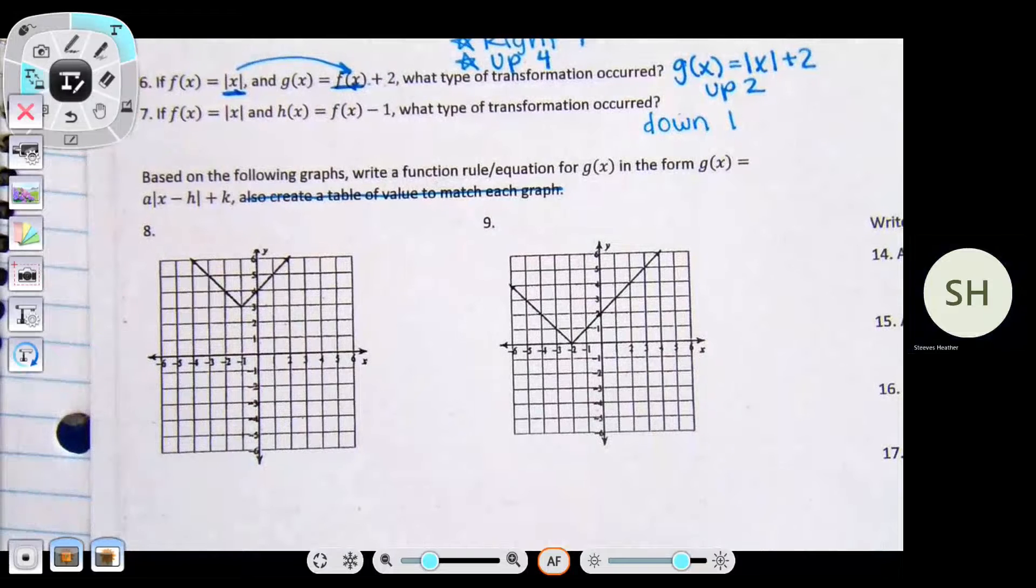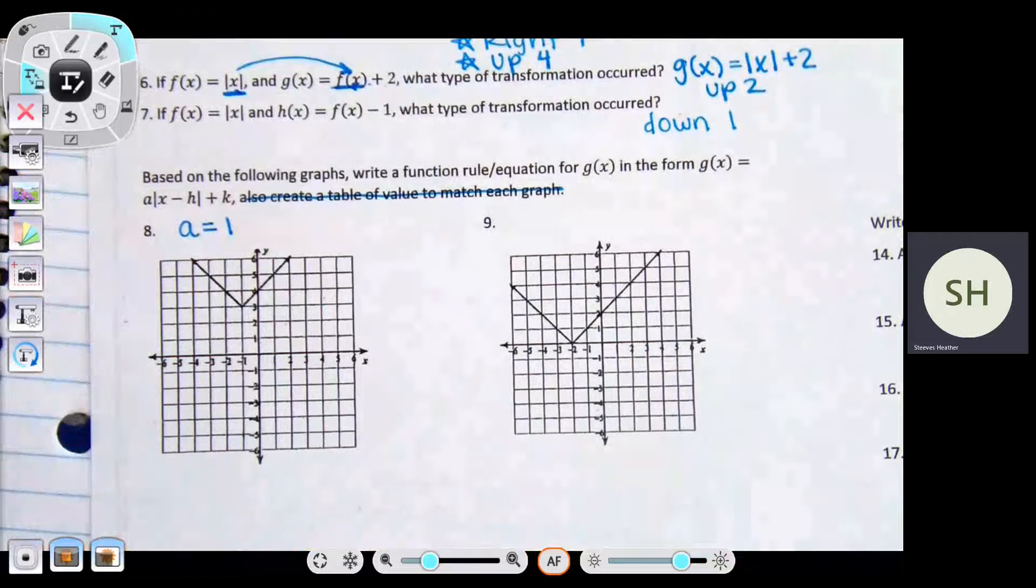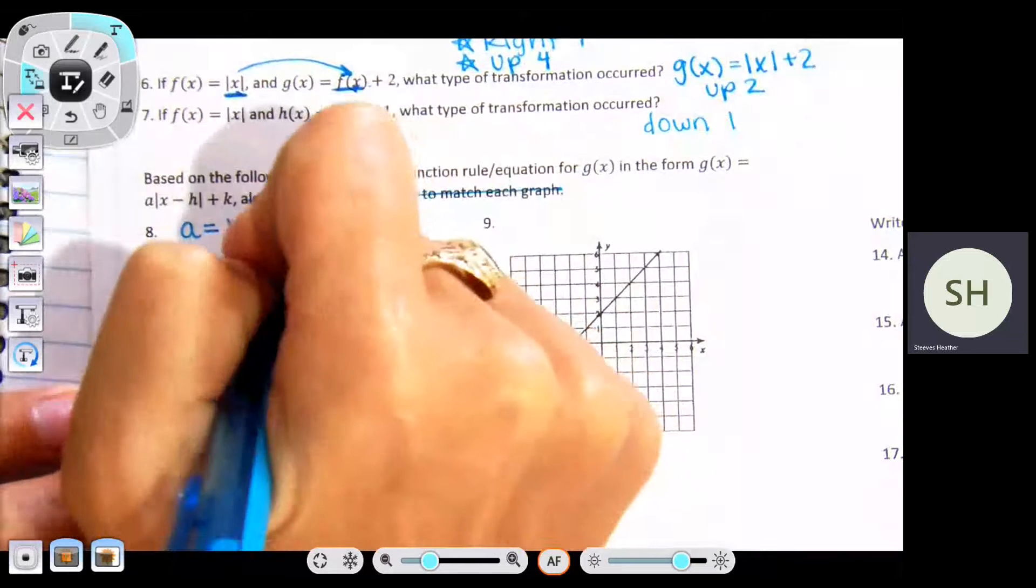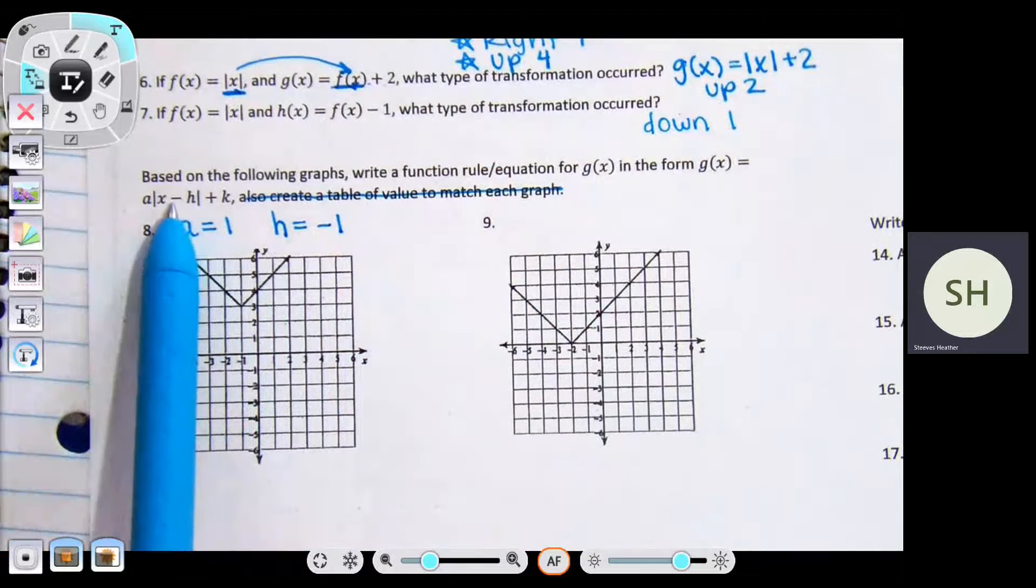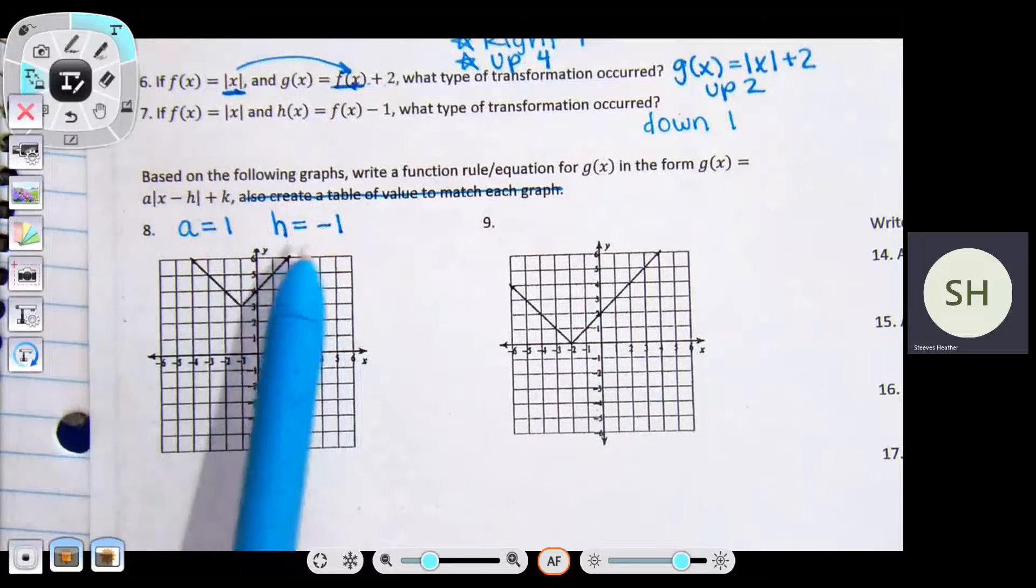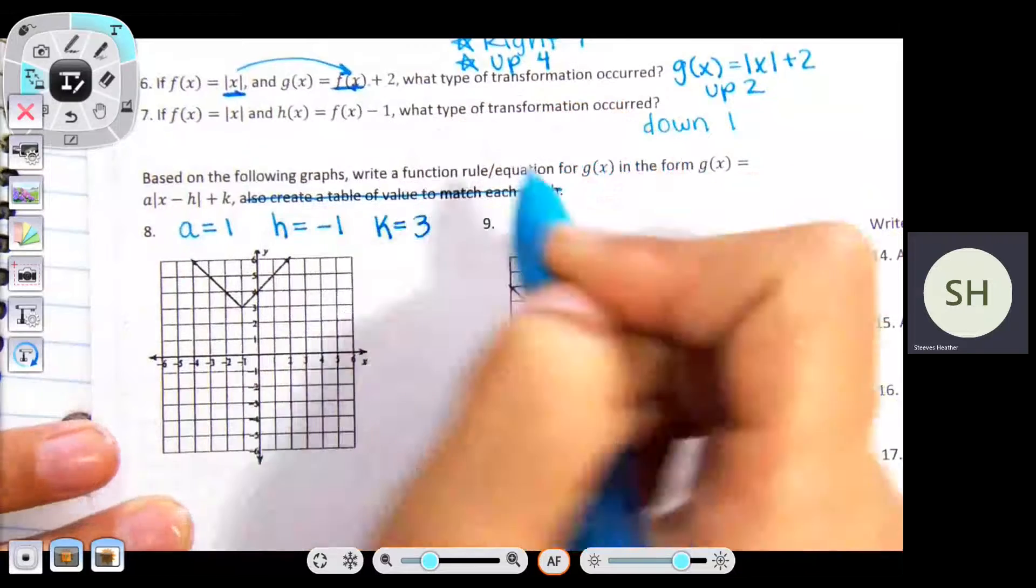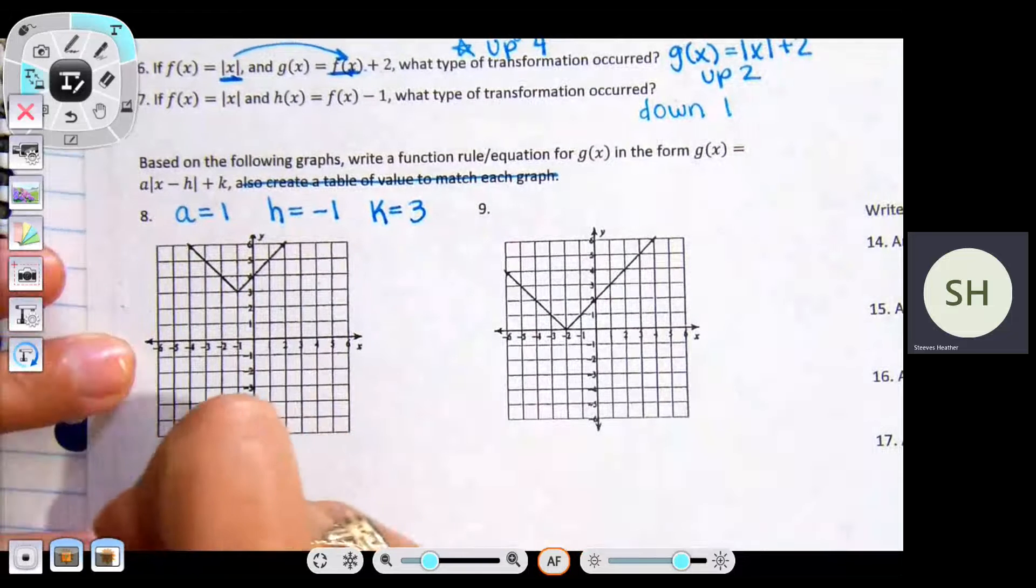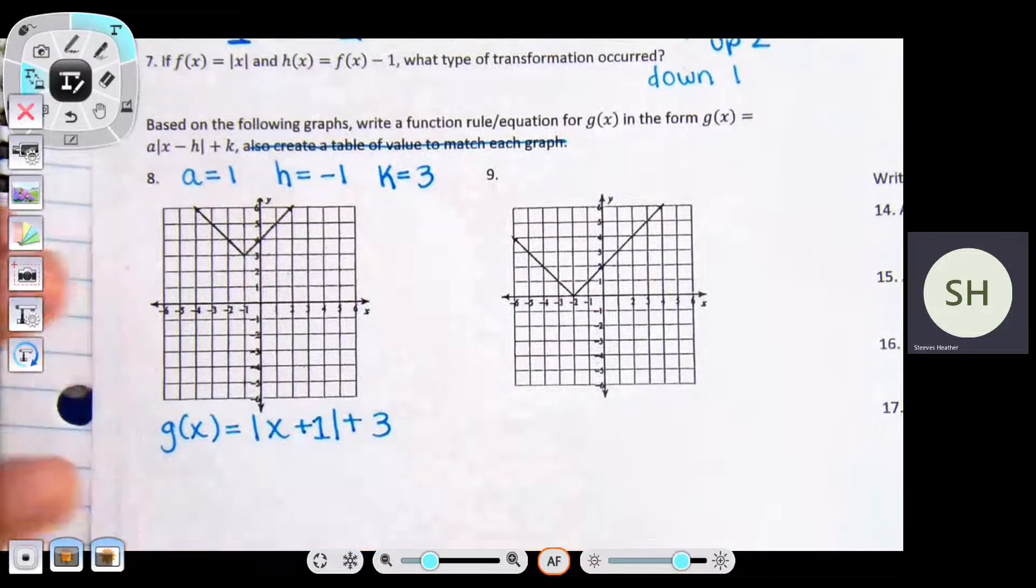Can anybody tell me what a is going to be equal to? A is equal to one. Why is it equal to one? It's going up one over one, up one over one, up one over one. And then what is h going to be? Negative one. It'll end up being positive in the formula because you have a minus and this is negative, that will make that plus. What's k? Three. So if those are my numbers, can anybody tell me the formula to represent this? G of x equals absolute value of x plus one plus three. Perfect.